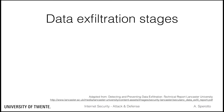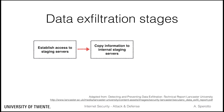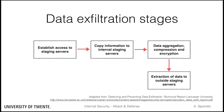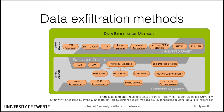Data exfiltration goes through the following stages. First, the APT will establish access to staging servers — that is, servers inside and outside the target network where the gathered information can be temporarily placed. Once the information of interest is available, it is copied to the internal staging servers. Once enough information has been gathered, it will be aggregated, compressed, and encrypted. At this point, the data are ready for the real exfiltration, which entails copying data from the inside to the outside staging servers. Finally, data is removed from the staging servers to cover the tracks of the attack.